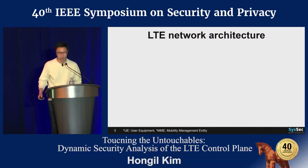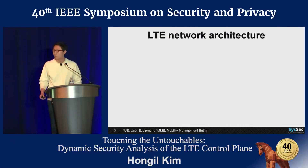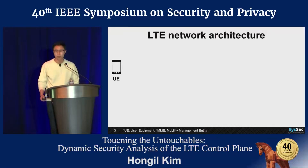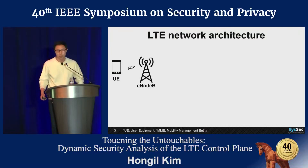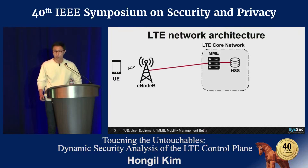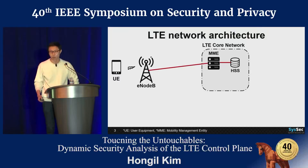Before we talk about the details of LTE security, let's see how LTE works. The LTE phone is called user equipment, or UE, and this UE makes a radio connection with a nearby base station called eNodeB. Using this radio connection, the UE communicates with a mobility management entity, MME, to register to the LTE network.